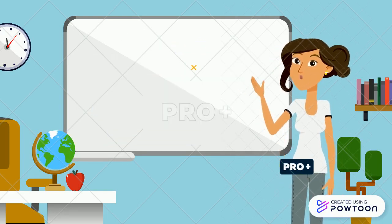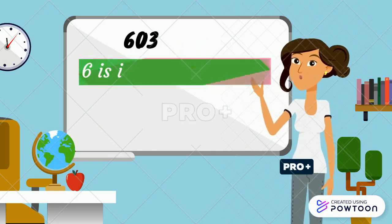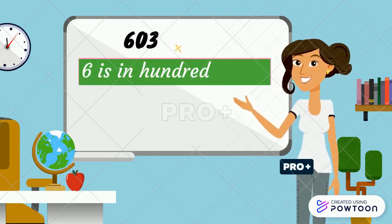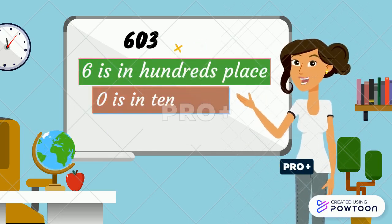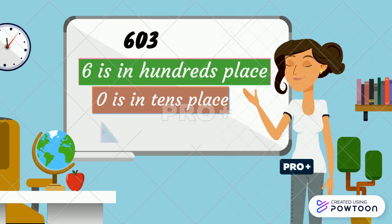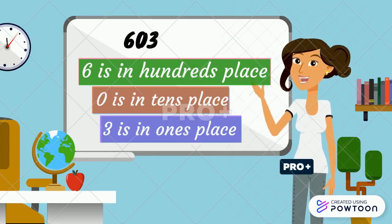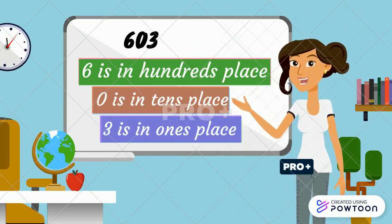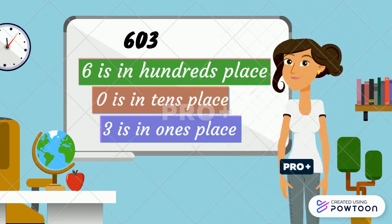Again: 603 — 6 is in the hundreds place, 0 is in the tens place, 3 is in the ones place. Remember students, start from hundreds, tens, and ones.